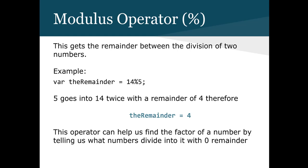So the modulus operator I actually previewed for you guys on day one. And what the modulus operator does is it gets the remainder of the division between the two numbers. So 14 or a 5 goes into 14 twice with a remainder of 4. Therefore, when we assign the value of 14 modulus 5 to the variable called the remainder, its value is 4. It divides it and finds out what's left. The modulus operator can help us find the factor of a number by telling what numbers divide into it with a 0 remainder. So if I did 15 modulus 5, I'd get the value of 0 because 5 goes into 15 evenly.